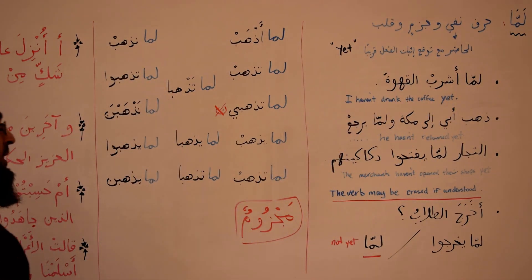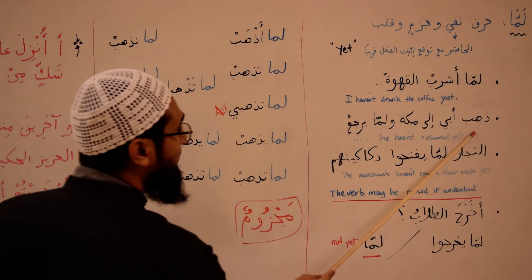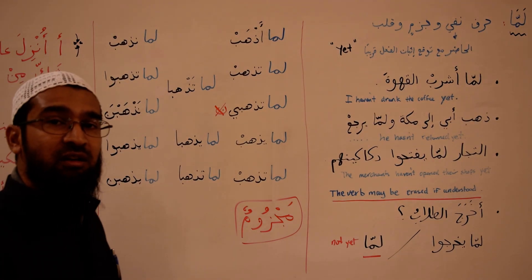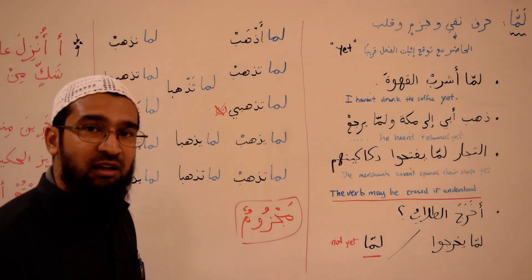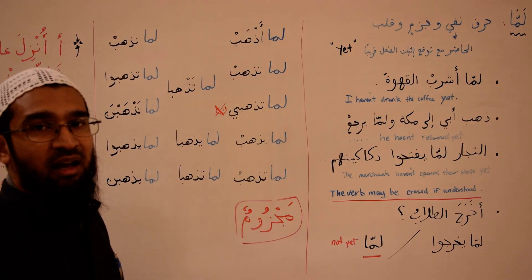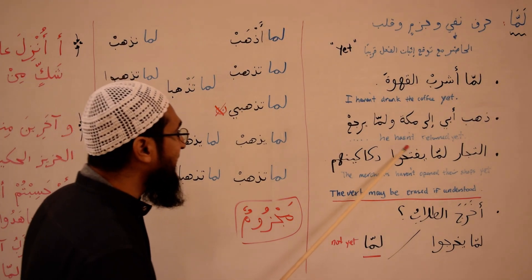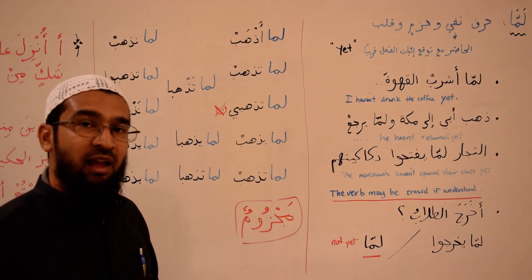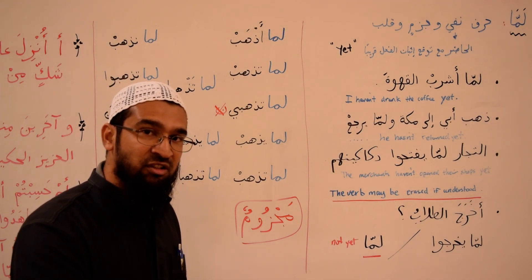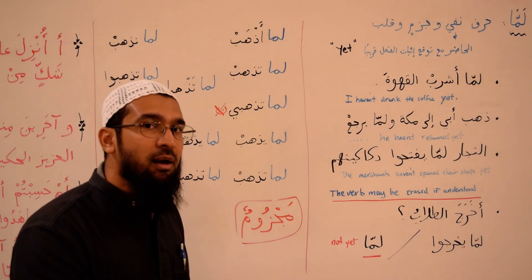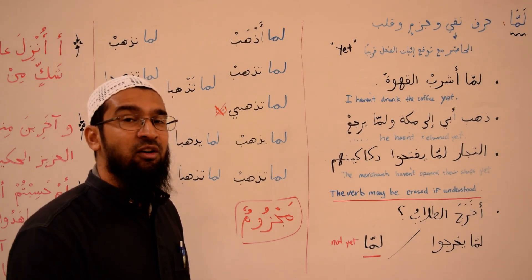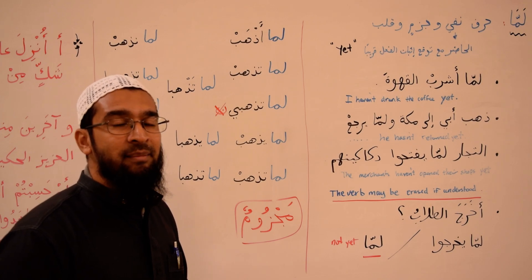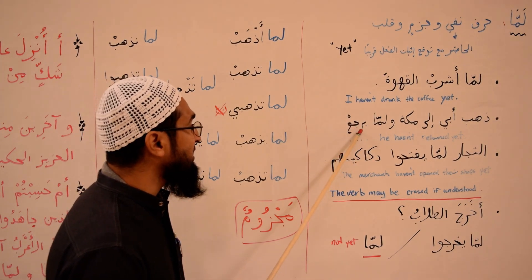Another example: ذهب أبي إلى مكة ولما يرجع — My father went to Mecca, ولما يرجع, and he hasn't returned yet. I'm negating it — up to now he hasn't returned, لما يرجع. But will he return later on? Yes, as expected. لما يرجع — he hasn't returned yet.